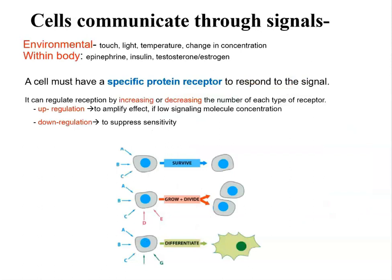Now we wonder where exactly these signals come from. They could be coming from the environment — for example, plants are going to be responding to light, and even temperature can have an effect on the cell's behavior. Within the body as well, your body cells can produce specific chemical messengers, and those chemical messengers are going to affect specific target cells.